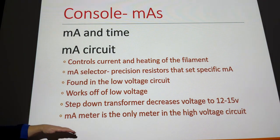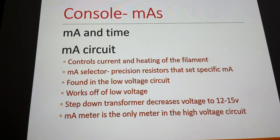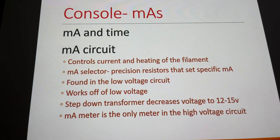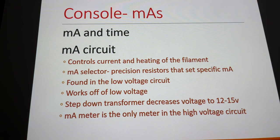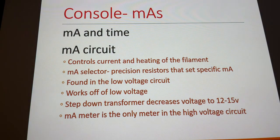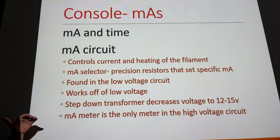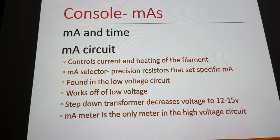All gauges and controls on the control panel work off low voltage for safety. You'd expect all of them to be in the low-voltage circuit, but the MA meter is actually in the high-voltage circuit — wired into the dead center of the high-voltage transformer. At that center point, voltage is essentially zero volts, so it still works off low voltage, but it's located in the high-voltage circuit.